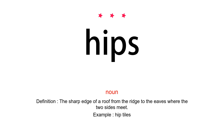Noun. Definition: the sharp edge of a roof from the ridge to the eaves where the two sides meet. Example: hip tiles.